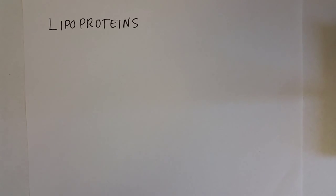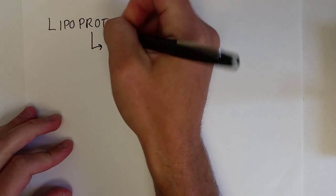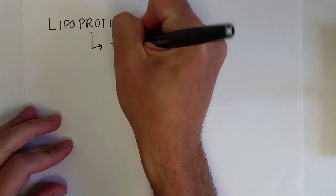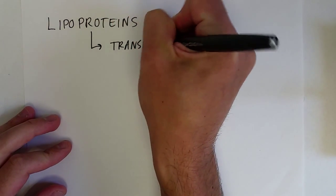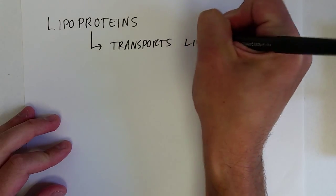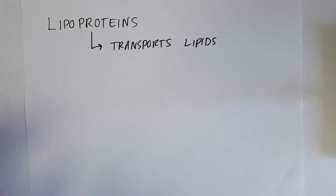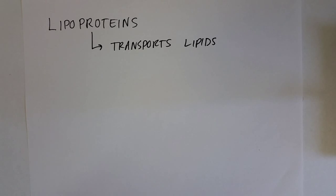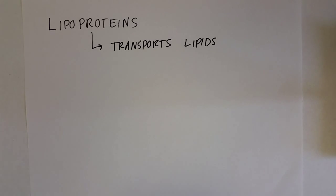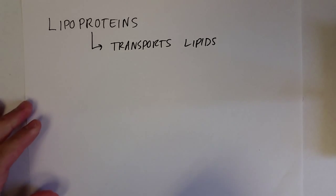The next type of molecules we are going to talk about are lipoproteins, and this is the way that your body transports lipids. We know that lipids are primarily nonpolar, so they have very poor solubility in aqueous solutions like your blood, so we need some type of transport mechanism to get them around your body — and lipoproteins are what do it.